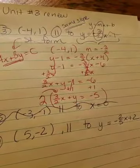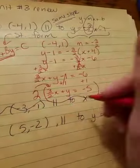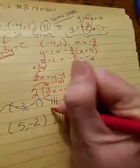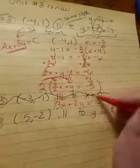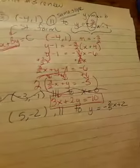2 times 3 halves x is going to be 3x, 2 times y is 2y, and 2 times negative 5 is negative 10. There's my answer.